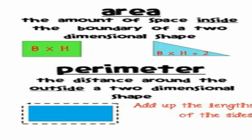The difference is this: area is the amount of space inside the boundary of a two-dimensional shape. If there is any shape — a triangle, a rectangle, a square, a composite shape — whatever is inside its boundary is called area. Perimeter is the distance around the outside of a two-dimensional shape — the length of the outer sides — which is the perimeter.